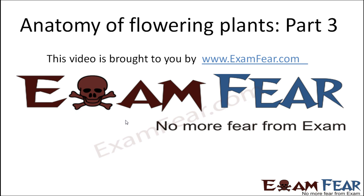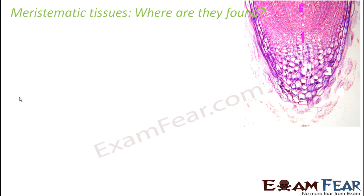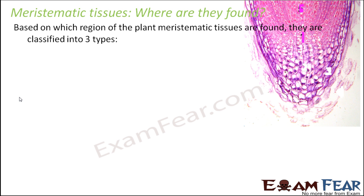This video on anatomy of flowering plants part 3 is brought to you by examfear.com. Now let us see where we find meristematic tissues. Based on which region of the plant meristematic tissues are found, they are classified into three types. There are various regions in a plant where meristematic tissues can be found, and based on that they are classified into three types.